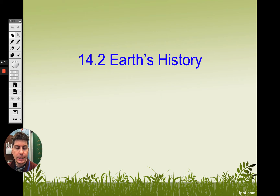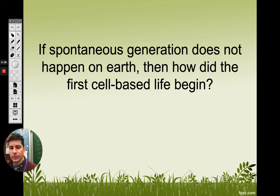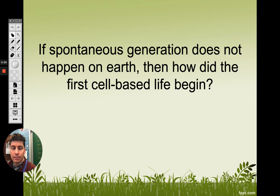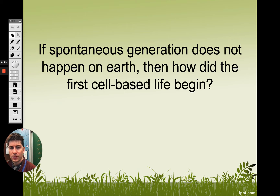We are going to begin section 2 of chapter 14 today. We're going to continue on with spontaneous generation just real quickly. We know that spontaneous generation does not happen on earth. In other words, we cannot have a living thing come from something non-living. We have to start with something living to give rise to something else that is living. So, where did the first cell come from? Where did the first living thing come from?